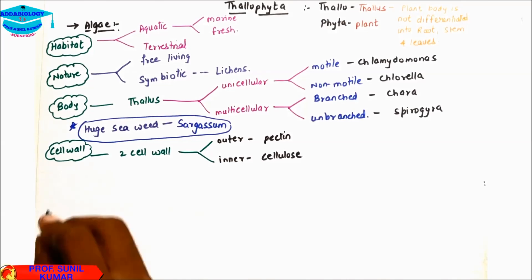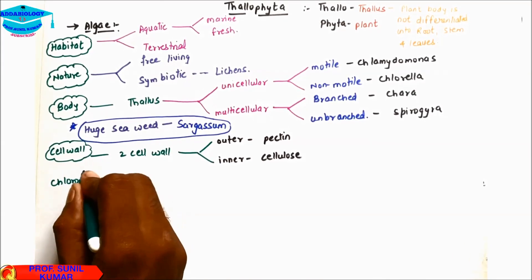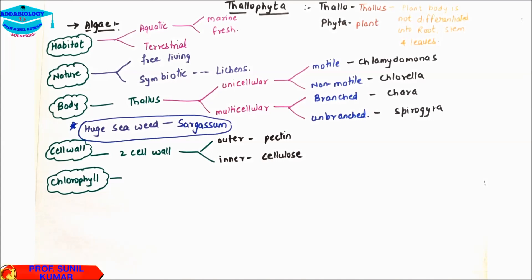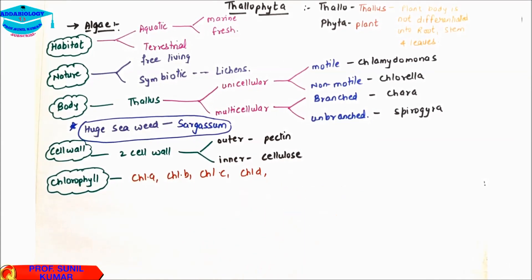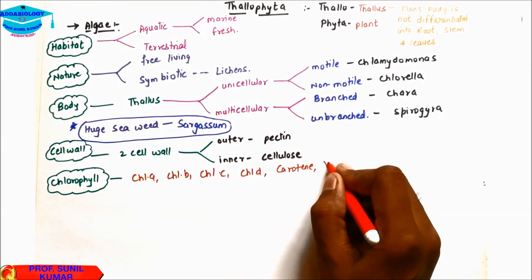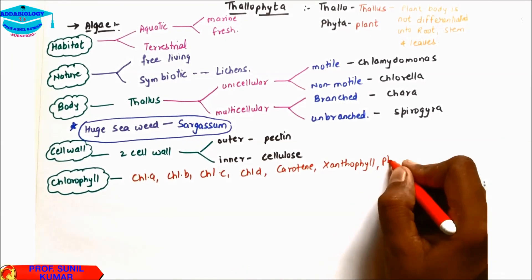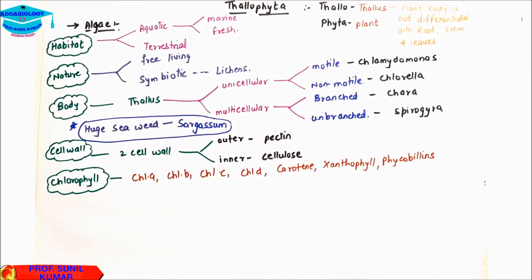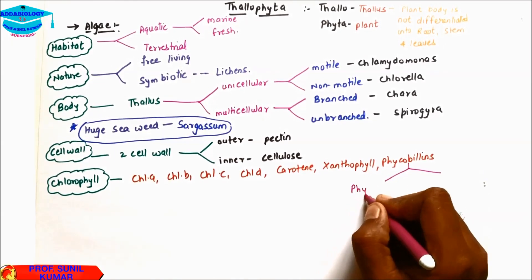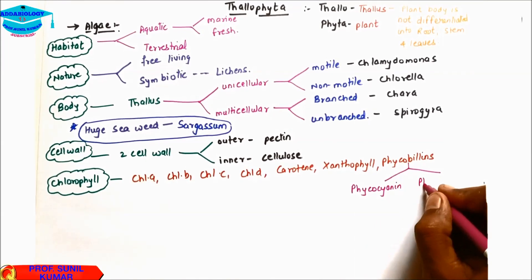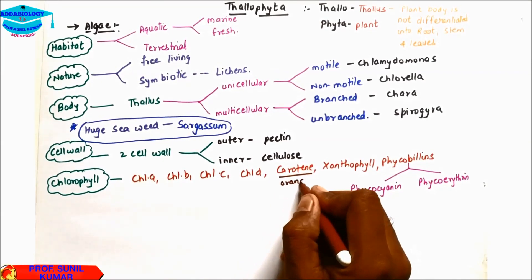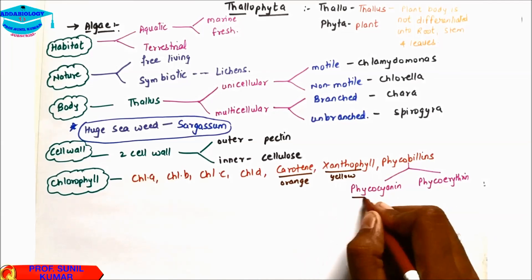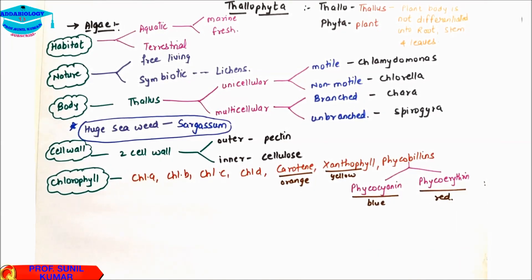Algae have different types of chlorophyll: chlorophyll A, chlorophyll B, chlorophyll C, chlorophyll D, carotene, xanthophyll, and phycobilins. Phycobilins has two types: phycocyanin and phycoerythrin. With respect to colors: carotene is orange, xanthophyll is yellow, phycocyanin is blue, and phycoerythrin is red.